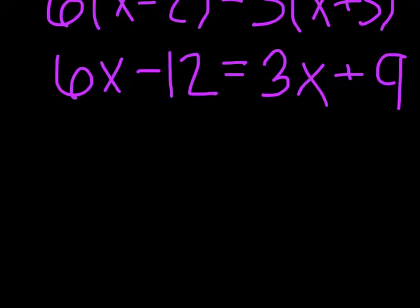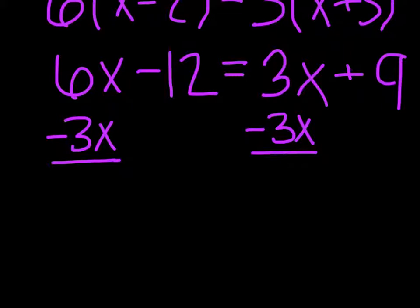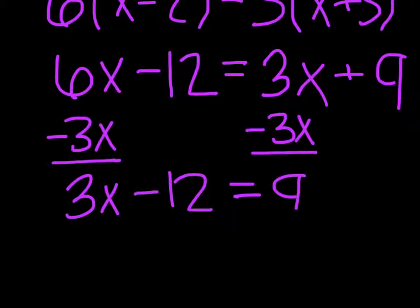Now we will have to subtract 3x from both sides. And that will get 3x minus 12 equals 9.